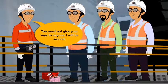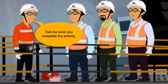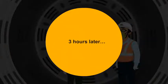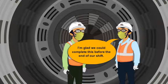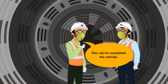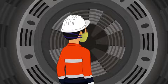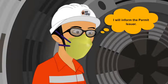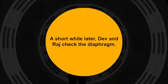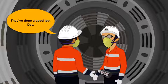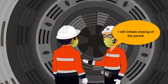Dev reminds the workmen not to give their keys to anyone and says he will be around — they should call him once the activity is complete. The workmen complete the activity before the end of the shift and inform Dev. Dev inspects the area, finds the activity completed perfectly, and informs the permit issuer, who acknowledges the good job and initiates closing of the permit.